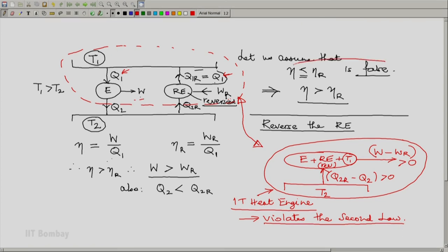And what did we do? We assumed that the Carnot theorem statement η less than or equal to ηr is false. Consequence of assuming this false is that we have violated the second law of thermodynamics, and that means this particular assumption is untrue. We cannot assume η less than or equal to ηr to be false, and this implies that η must be less than or equal to ηr, and that proves the Carnot theorem. Thank you.